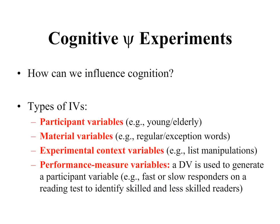Material variables: for example, in my line of research with visual word recognition, I have control over the types of stimuli I present to my participants — material variables are something an experimenter can control. Experimental context variables: for example, I can control whether a participant sees only regular words, only exception words, or both regular and exception words. Those are called list manipulations.